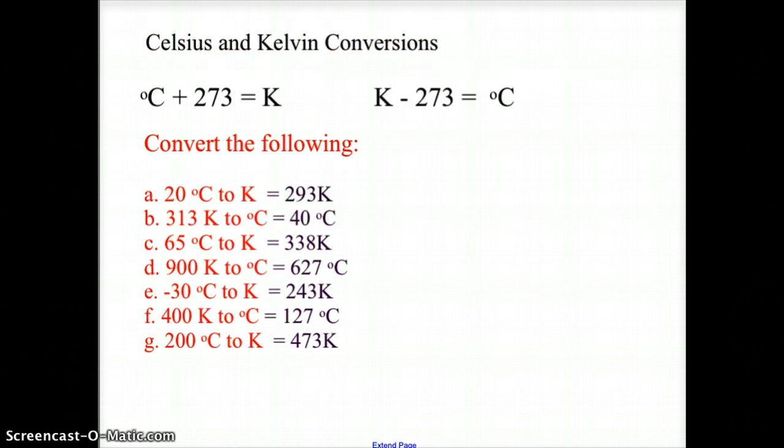In the conversions for Kelvin to Celsius, 20 degrees Celsius comes out to 293 Kelvin. 313 Kelvin is 40 degrees Celsius. 65 degrees Celsius is 338 Kelvin. 900 Kelvin is 627 degrees Celsius. Negative 30 degrees Celsius is 243 Kelvin. 400 Kelvin comes out to 127 degrees Celsius. And 200 degrees Celsius is 473 Kelvin.